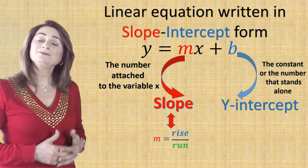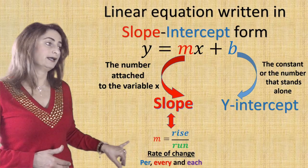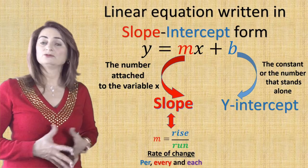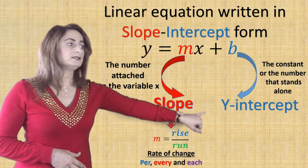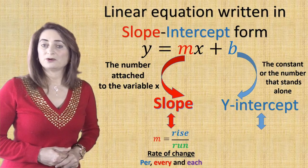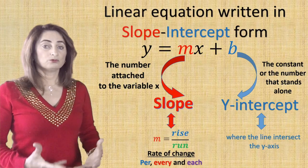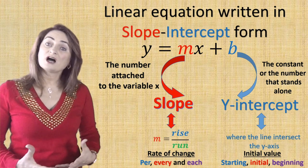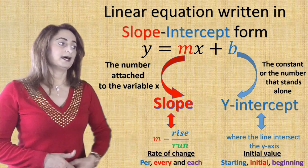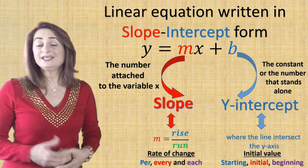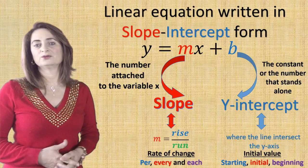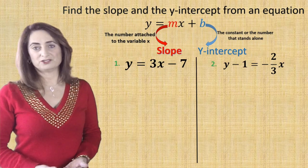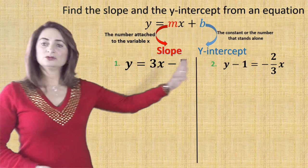In word problems, slope means a rate of change. Any word like 'per,' 'every,' or 'each' signals a rate, which means a slope. The y-intercept is where the line intersects the y-axis on a graph. In real-world applications, it means the initial value or starting cost — any word like 'starting,' 'initial,' or 'beginning' indicates the y-intercept.